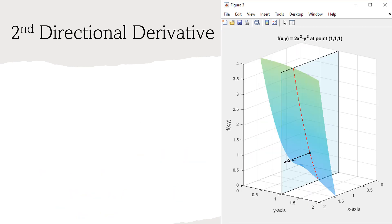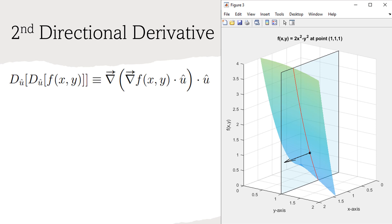What happens if we apply the directional derivative twice in the direction of u? Well, we end up with an expression as follows: the second partial derivative of f with respect to x times a squared, plus 2 times the mixed second partial derivative of f times a and b, plus the second partial derivative of f with respect to y times b squared. This expression will be the central emphasis of this video.